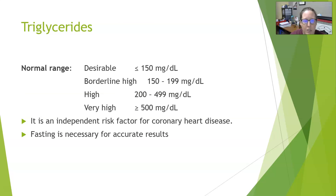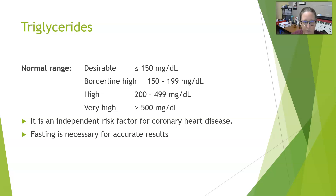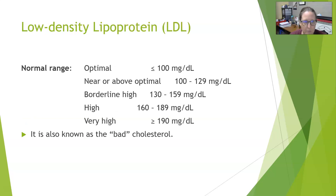Triglycerides normal range: desirable is less than 150 milligrams per deciliter. Borderline high is 150 to 199 milligrams per deciliter. High is 200 to 499 milligrams per deciliter, and very high is above 500 milligrams per deciliter. Triglycerides are an independent risk factor for coronary artery disease. Fasting is absolutely necessary for accurate results because this test is very much affected by food ingestion — especially a meal that contains fats.